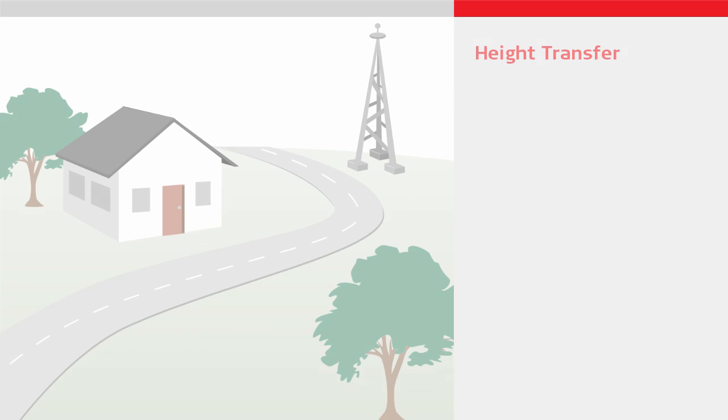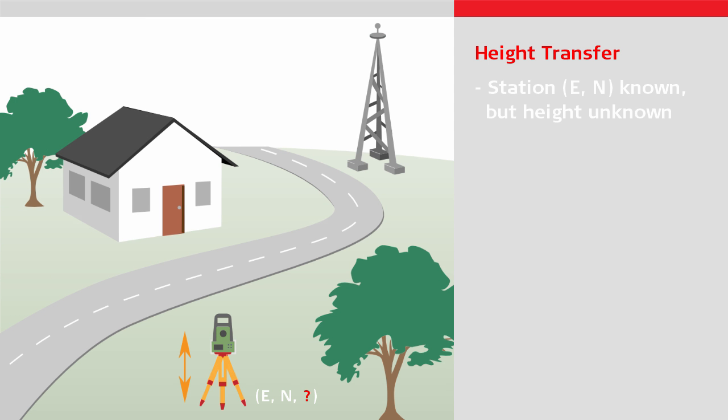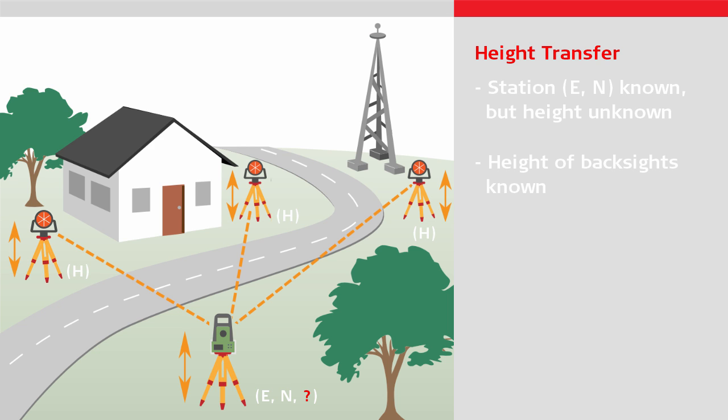Use the transfer height method in the following case: if the point over which you will position the total station is known, but not the height, and you simply need to establish the height of the total station by measuring to one or more points of which the heights are known. Note that the orientation of the total station would already be correct, or you don't care what the orientation is.